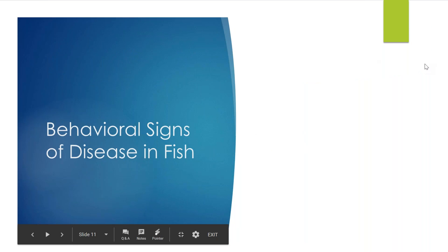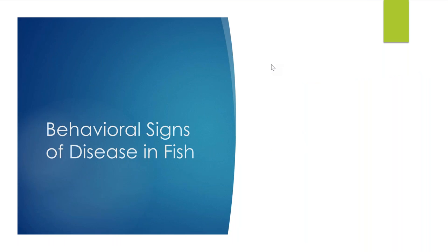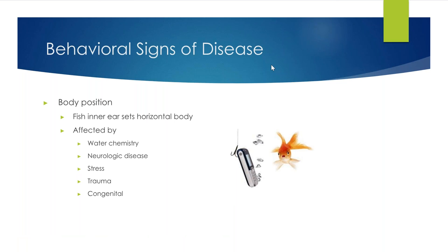Now that we've gone through the physical signs of disease in a fish, we're going to go through the behavioral signs, which can be a little more difficult to pick out. Starting with body position: normal fish body position is straight up and down in the middle of the water column. Fish do have ears — they don't have external ears like we do, but their inner ear sets the horizontal body position. This can be affected by water chemistry, neurologic disease, stress, trauma, and congenital problems.